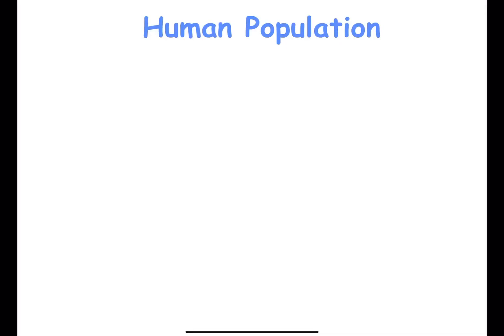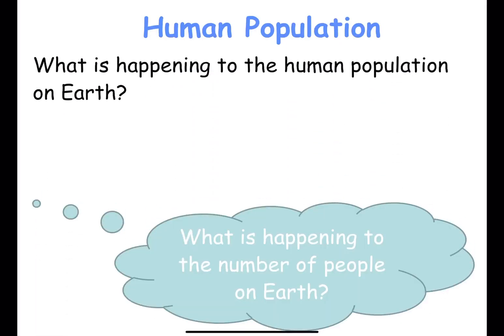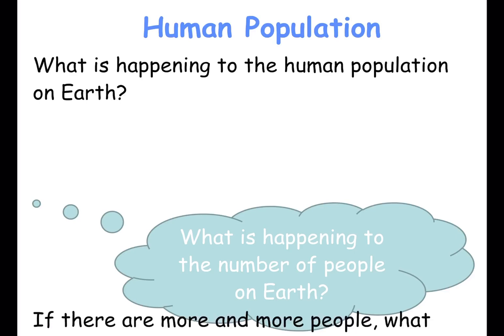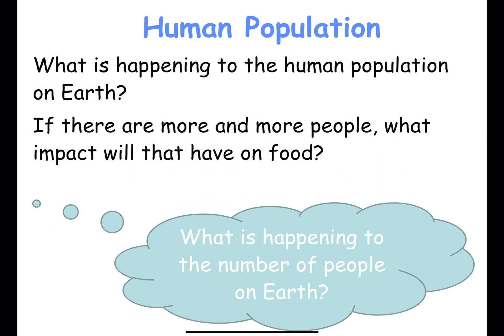Thinking first about the human population — what is happening to the number of people on the earth? The number of people on earth has increased rapidly over the last few years. The more people there are, the more food we require. However, with a growing population, the space for growing food is decreasing. This means we need to be more efficient in our food production, and one way to do this is to use fertilizers.